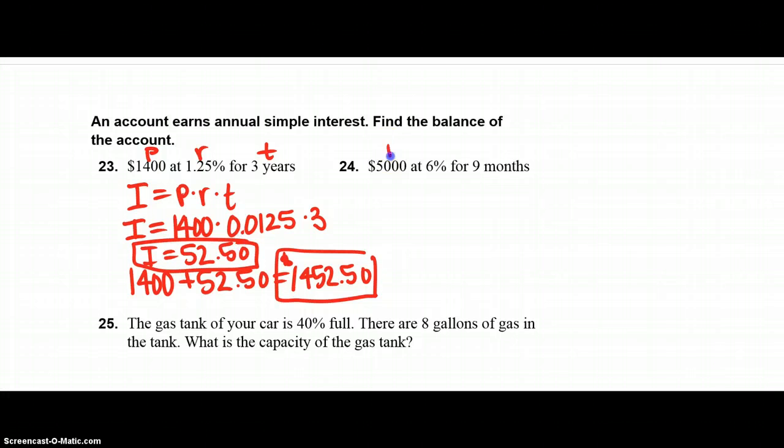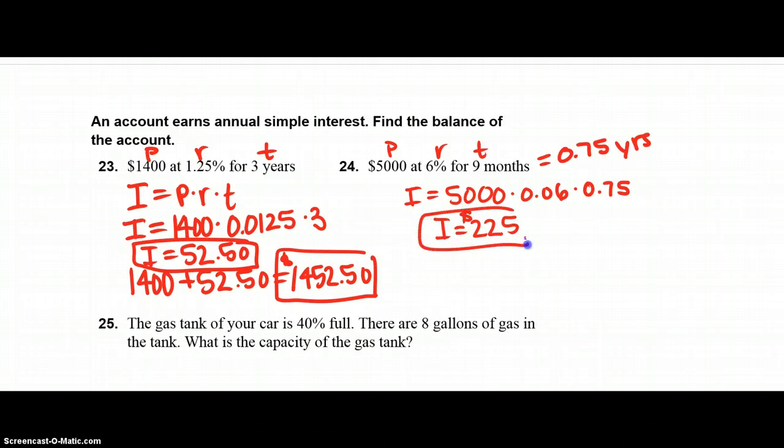Same thing on 24. This is P, this is R, this is T. Be careful, this is 9 months, which is 0.75 years. So I is equal to 5,000 times 0.06 times 0.75. And when you do that in your calculator, you get I is equal to $225. That's the interest. Now you need to take your principal and add your interest, and you get $5,225 as the balance of the account.